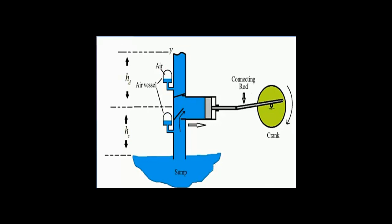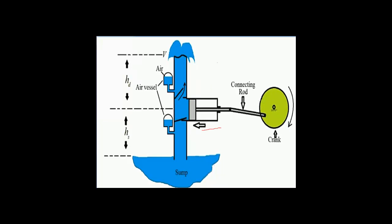Now we will discuss the working of the air vessel. During the suction stroke, the piston moves from inner dead center to outer dead center and the suction valve is opened. In both air vessels the water level is at the lowest level. During the delivery stroke, the piston moves from outer dead center to inner dead center; the delivery valve is opened and water is pushed with high pressure into the delivery pipe and also fills the air vessel with high pressure.